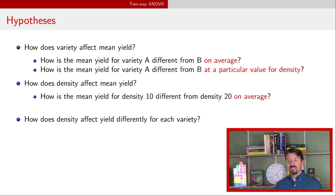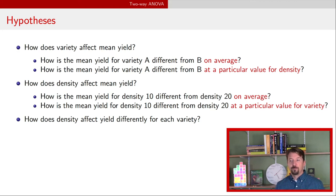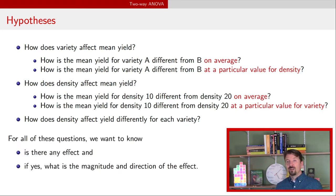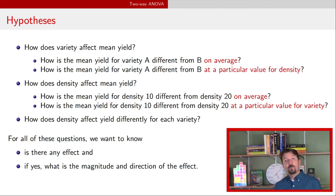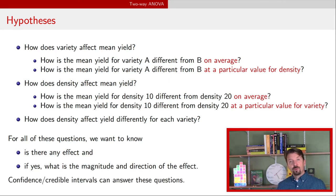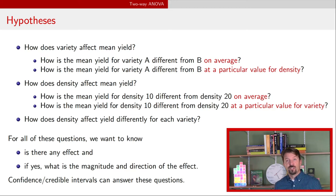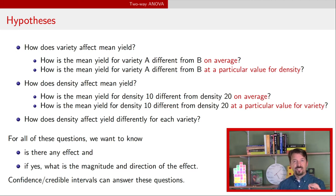We can do similar specific questions for density — for example, how is mean yield for density 10 different from density 20 averaged across variety, or for a particular value of variety. For each of these questions, we want to know first if there's an effect, and if there is a statistically significant effect, we want to know the magnitude and direction. My approach is to compute credible and confidence intervals — they are exactly the same in this instance — and those intervals answer these questions. If an interval does not cover zero, there is some effect, and immediately it tells us the magnitude, direction, and uncertainty.